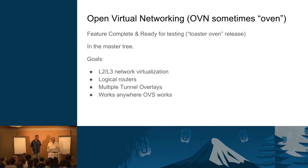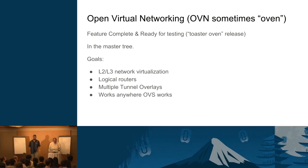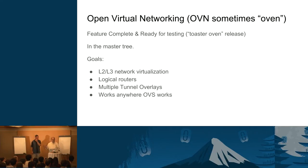Open Virtual Networking — big shout-out to Justin, Ben, Russell, and Kyle for their talk on Tuesday morning. It was up on YouTube by Wednesday morning, so you can go watch it. OVN is in the master tree, so if you do a git clone of Open vSwitch, you get Open Virtual Networking for free. It has these goals: L2/L3 network virtualization, logical routers, multiple tunnel overlays with Geneve added. Works anywhere that Open vSwitch works — and that's really important, since a lot of the reference architectures for OpenStack rely on Open vSwitch.